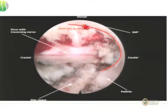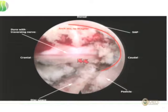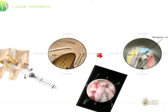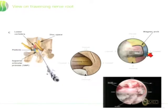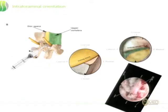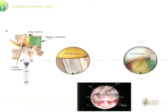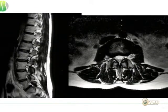Once you turn the scope, the cranial orientation will change, so orientation is critical. Good orientation points are the pedicle and SAP, as well as the posterior axis. Once you see the nerve root, the surgery becomes neurosurgical. You have to keep in mind that the course of the nerve root is different depending on how you hold the scope — this is important to avoid mistakes and injuries to neural tissue. Once you look outside, you have the exiting nerve root in your picture.